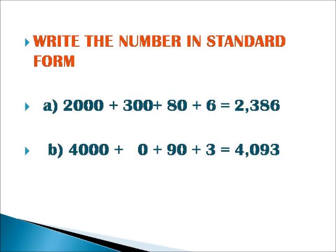Next, we have write the number in standard form. The first one is 2000 plus 300 plus 80 plus 6. This can be written as 2,386. And the second sum is 4000 plus 0 plus 90 plus 3. This can be written as 4,093.